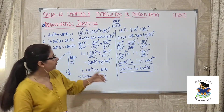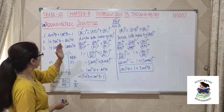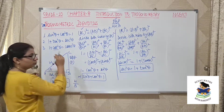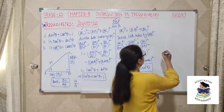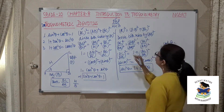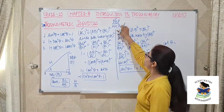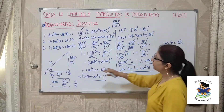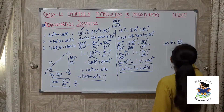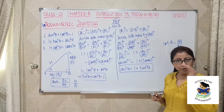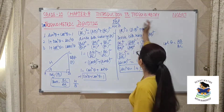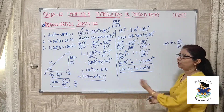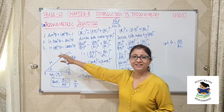For homework, prove the third identity: 1 + cot²θ = cosec²θ. First find cot θ, which is base over perpendicular = AB/BC. So the denominator we need is BC. Divide the Pythagorean equation by BC², then follow the same steps and you will automatically arrive at the third identity.